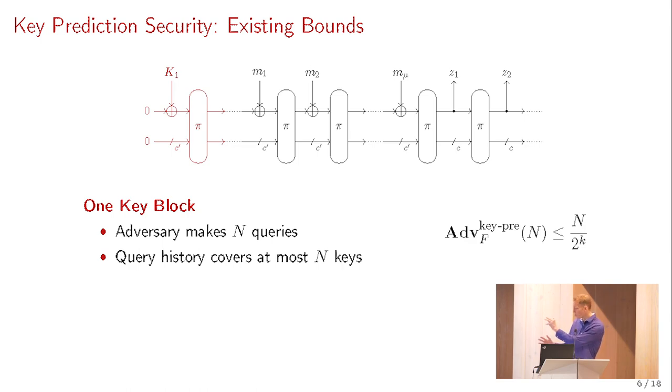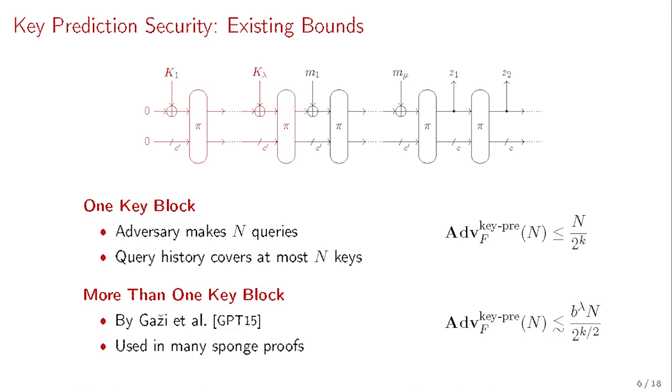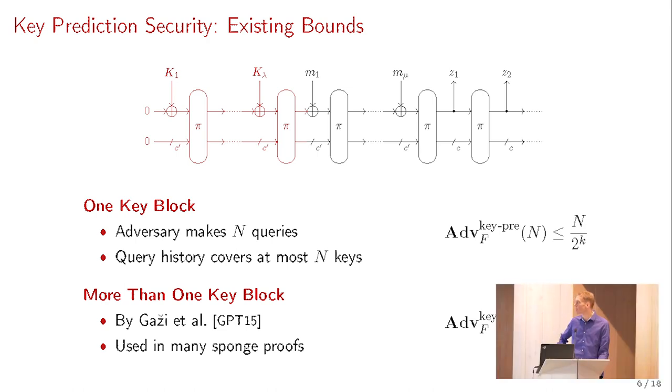It's a weird game, right? It's not a security model on its own. But what happens if you look at typical keyed sponge proofs, this is typically a bad event. If you look at the analysis, somewhere hidden in the analysis is a bad event, namely the event that the attacker accidentally broke this. However, in this work, we focus on this bad event in particular, and that's why we called it the key prediction security. But it's not a security notion on itself. It should be seen as a part of a big security analysis of the keyed sponge.